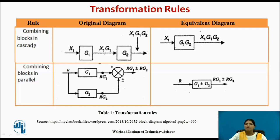The first rule is to combine the blocks in cascade. If the blocks are connected in cascade, they are multiplied with each other. Here G1 and G2 are connected in series, so we take the product of the transfer functions of those blocks — that is G1 into G2.